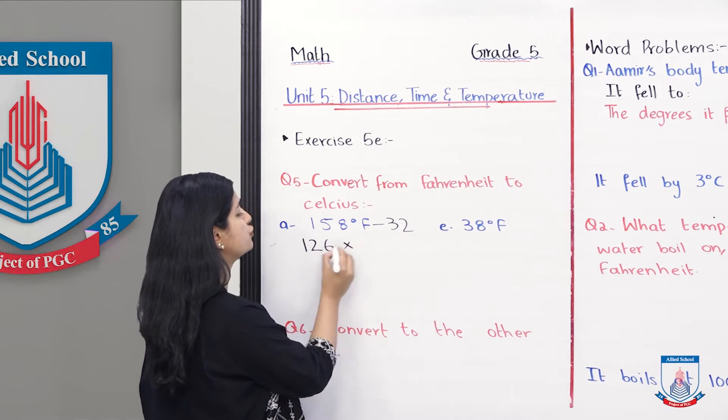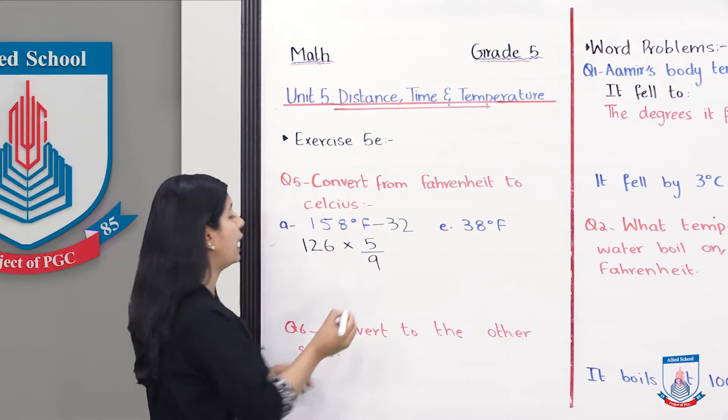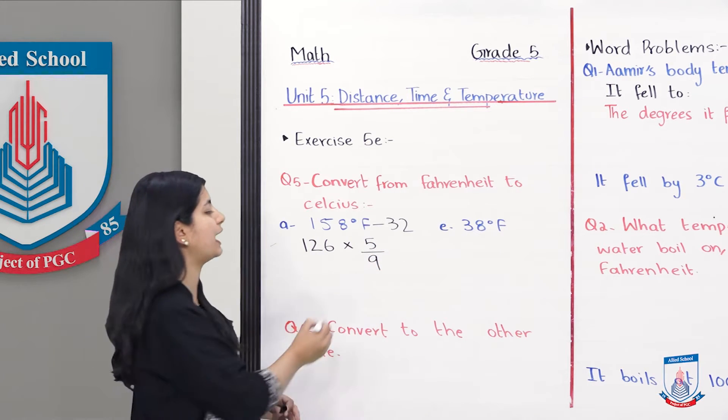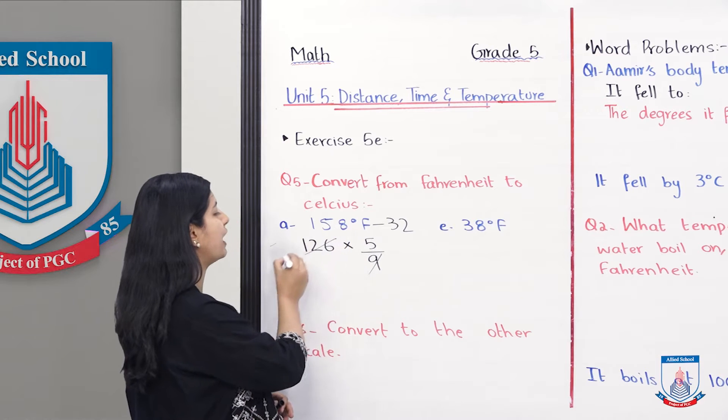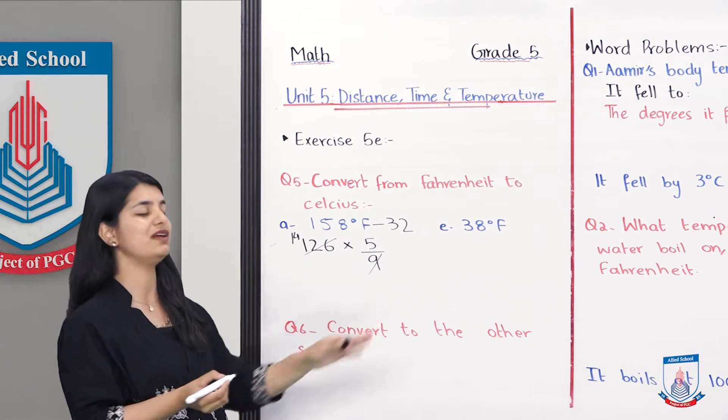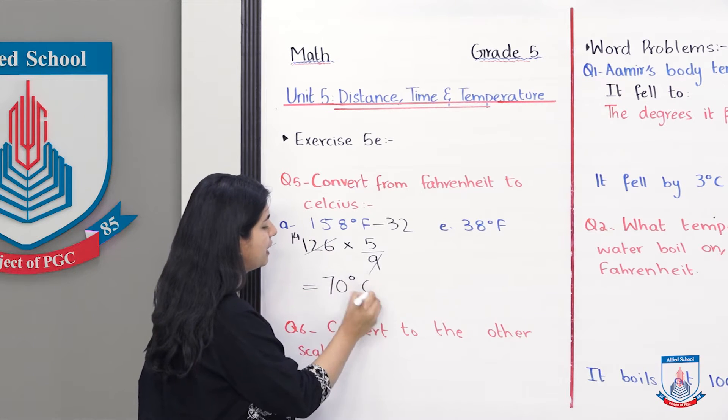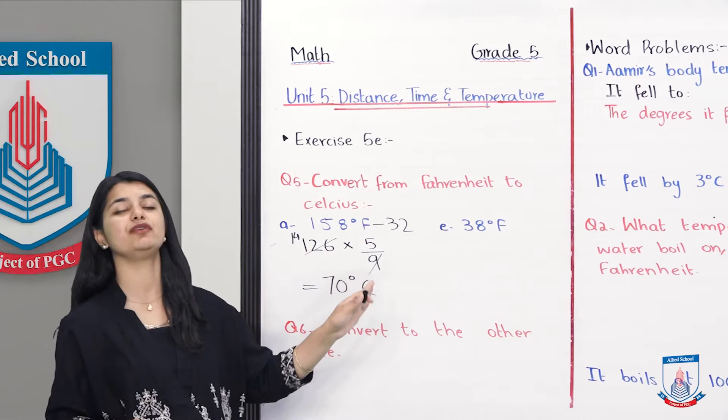And then we multiply it by 5 over 9. You know that if we cancel both and divide both by 9, so here it comes to 14. 14 into 5 is 70. So simply what is your answer? 70 degree Celsius.